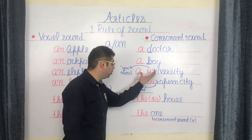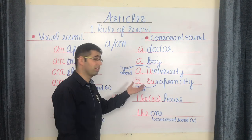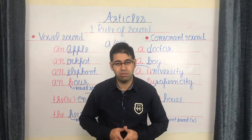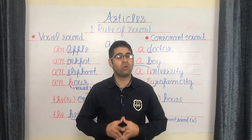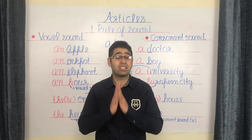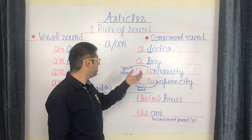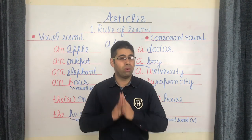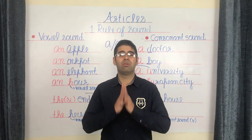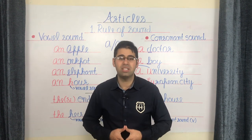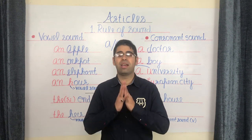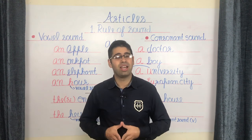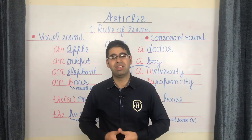H actually being a consonant should be receiving the article A, and likewise U and E being vowels should be receiving the article AN. The answer lies in the extension and rectification of that previous rule: it is not so much the spelling, but the sound which influences the choice between the articles A and AN. If a word begins with a vowel but the vowel ends up sounding like a consonant, then it's going to receive the article A. And likewise, if a spelling begins with a consonant but the consonant ends up sounding like a vowel, then it's going to receive the article AN.